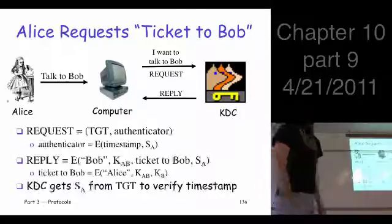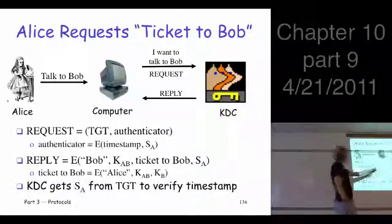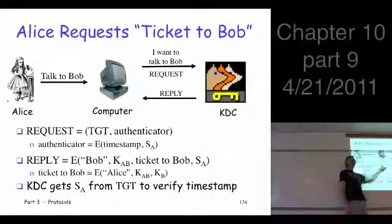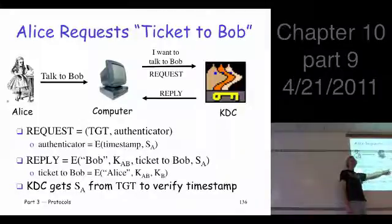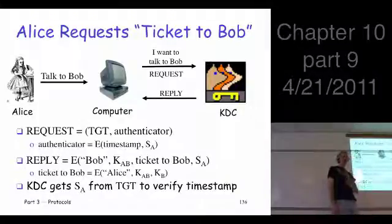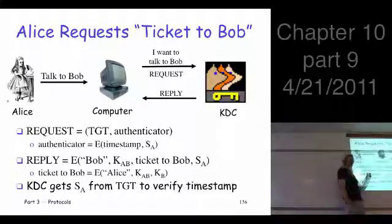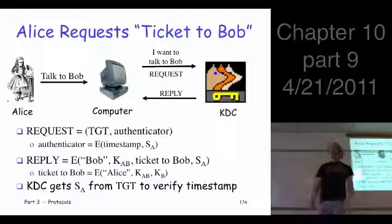Okay, what's in those? The request includes the TGT, right? That's your credentials. And somehow we have to authenticate, in the sense of making sure it's not a replay or something like that. What's the simplest way to authenticate? Just encrypt a timestamp. And so that's what we did.